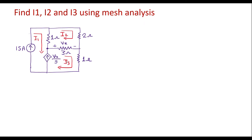This is the given circuit. In this circuit, we have three loops, and the three loops contain currents I1, I2, and I3. We are supposed to find I1, I2, and I3. Let me name the nodes: A, B, C, D, E, F, G, and H. Here A, B, H, F, G, A is the loop in which current I1 is flowing.